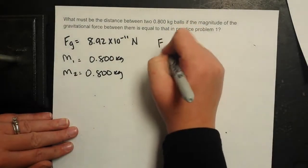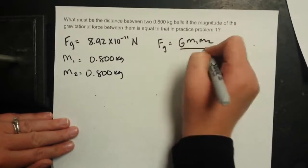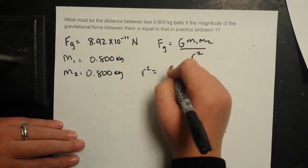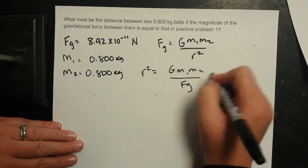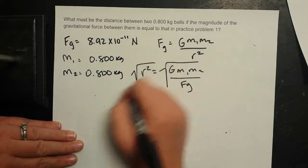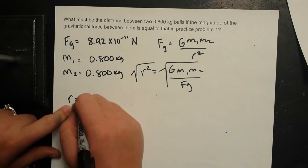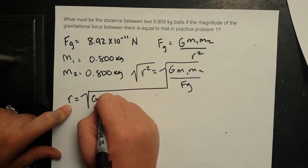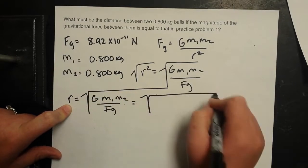We still know that Fg equals G M1 M2 over the distance squared. So R squared then is G M1 M2 over Fg. Taking the square root of both sides, we get R, or the distance, is the square root of G M1 M2 over Fg.